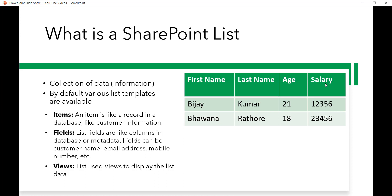In an organization, people use SharePoint lists to organize information in their SharePoint portal. A SharePoint list is a collection of data and it has three core elements. First is the item — for example, one row containing all the information about a particular employee. Second is the field, which is like a column in a table or metadata — for example, first name, last name, age, salary, email address, customer name, mobile number. Third is the view, which is how the list displays the data.